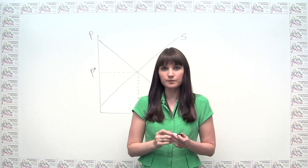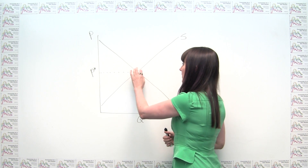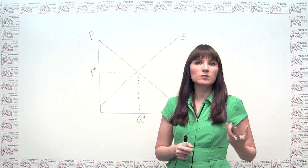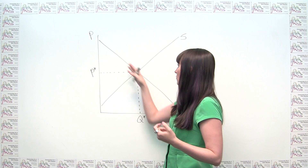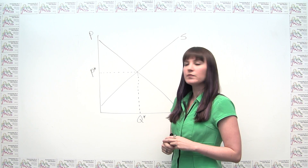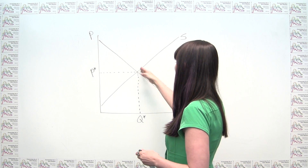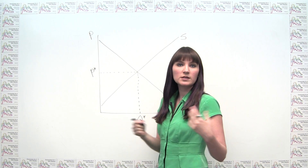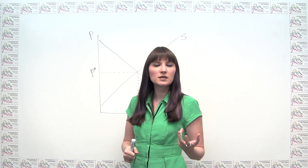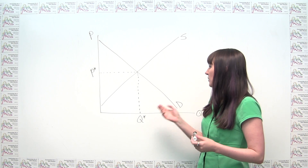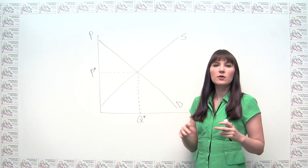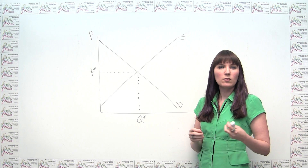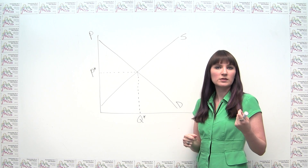Now, the student's argument was that this price, since it's on the demand curve, is actually the maximum price that this group of consumers — this being a market demand curve — is willing to pay for this quantity of output. So he's saying, you told us that consumer surplus was willingness to pay minus the actual price. So it seems like consumer surplus would be zero, even though you gave some rules about identifying a triangle.